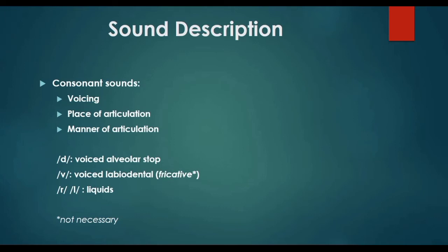That means, students, we only need to include those features that are important and relevant in order to identify what sound it is. If I say 'voiced labiodental,' you immediately know I'm talking about the sound /v/. And if I say 'voiceless labiodental,' you immediately know I'm talking about /f/. So fricative in this case is not necessary. Remember: when a feature is not necessary, you don't have to include it in the sound description.